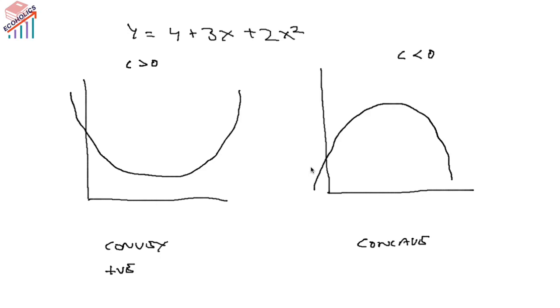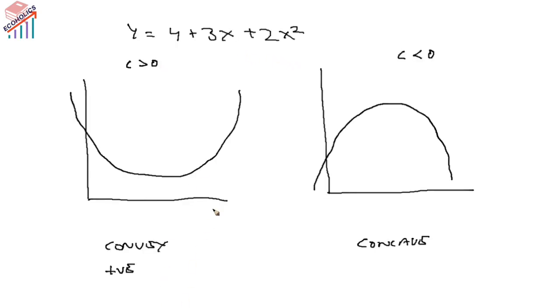The graph of any quadratic function is known as a parabola, which may be either convex or concave. A parabola is a curve with a turning point, unlike the linear function, and its slope changes with different values of x.